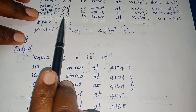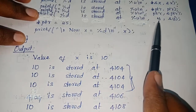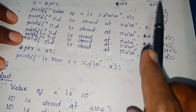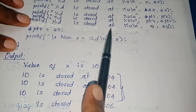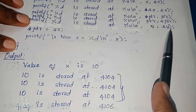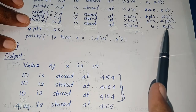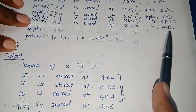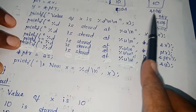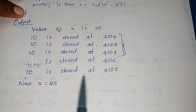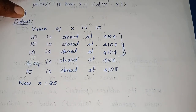Next printf: '%d' with argument y. What is y? Value of y is 10. So: '10 is stored at' — what is the address of y? — 4108. Output: 10 is stored at 4108.